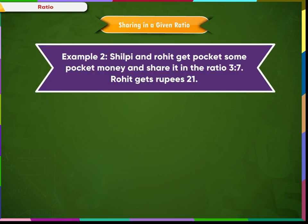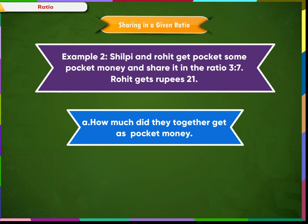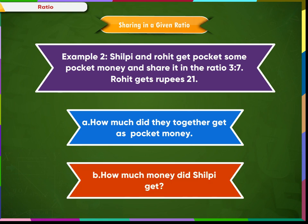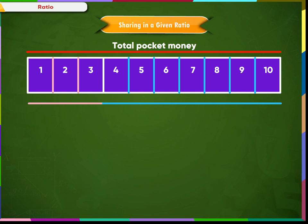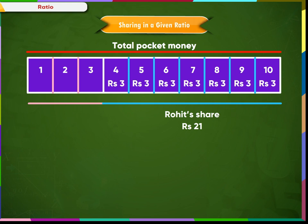Let us see another example. Shilpi and Rohit share pocket money in the ratio 3 is to 7. Rohit gets Rs. 21. We represent the share using a box: Shilpi gets 3 parts and Rohit gets 7 parts. Since Rohit gets Rs. 21 across 7 parts, each part is Rs. 3. So in Shilpi's share, each part is also Rs. 3. Since Shilpi gets 3 parts and each part is Rs. 3, Shilpi gets Rs. 9.